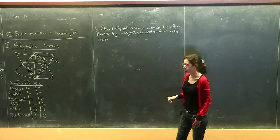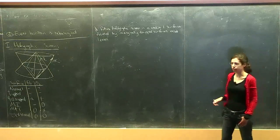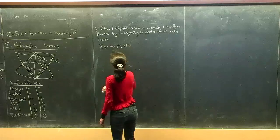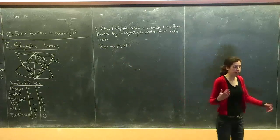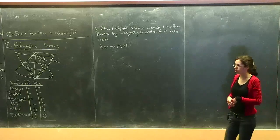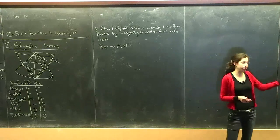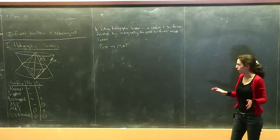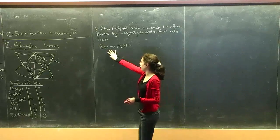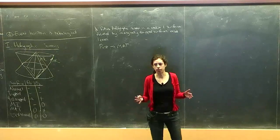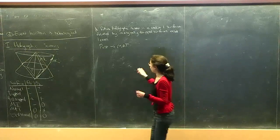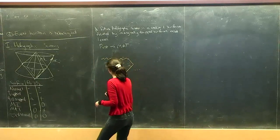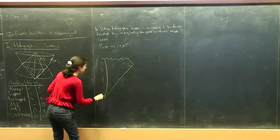We can define a past holographic screen as a co-dimension one surface foliated by marginally anti-trapped surfaces. You can already see why you might think of this as a local black hole boundary, since we think of the black hole interior as populated by trapped surfaces and the exterior by normal surfaces, so it makes sense to think of the boundary as foliated by marginally trapped surfaces. The past holographic screen can be thought of as a cosmological horizon in expanding cosmologies.